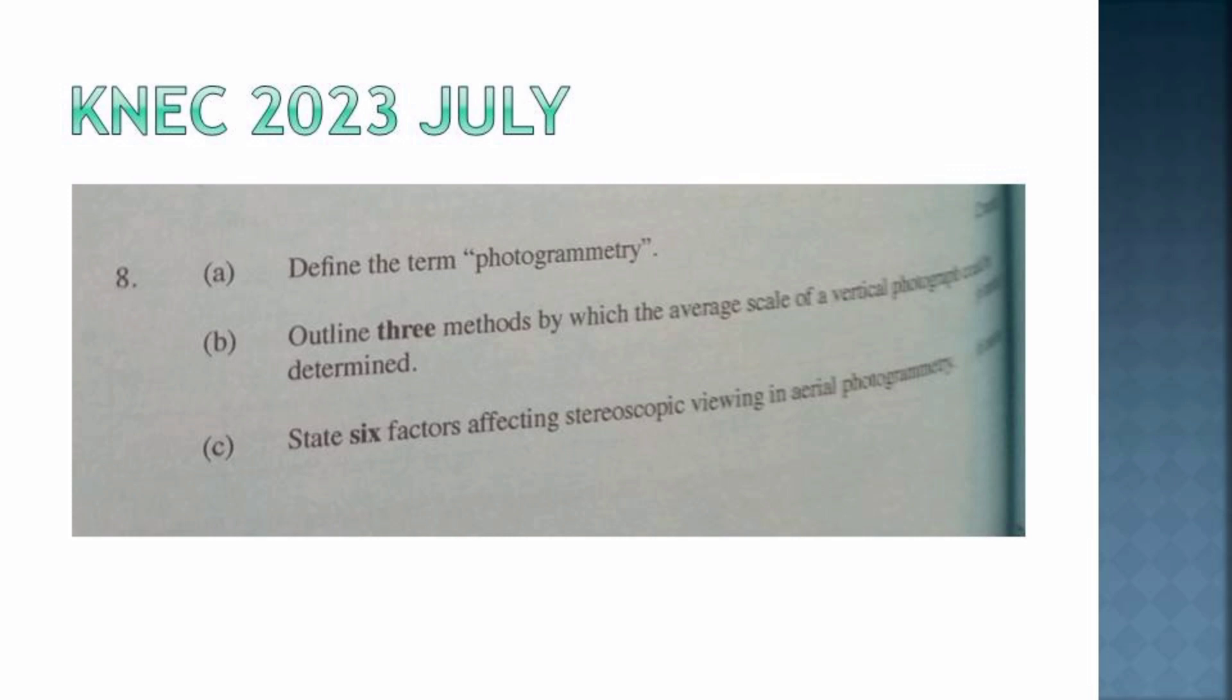That is the July 2023 series paper for diploma three under building and civil engineering. Question eight: First, define the term photogrammetry. Question B, outline three methods by which the average scale of vertical photographs may be determined. Question C, state six factors affecting stereoscopic viewing in aerial photography.